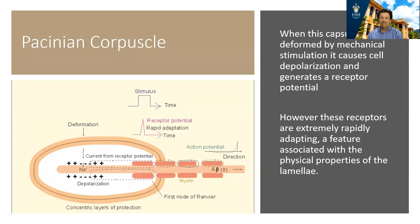When the capsule, which as we said is very large, is deformed due to pressure, that results in a change in membrane potential. Sodium is able to enter the membrane of the nerve, leading to a generator potential, and if large enough, you get an action potential being fired in the group 2 myelinated nerve. One of the unique features of the Pacinian corpuscle is that it is a very rapidly adapting receptor.